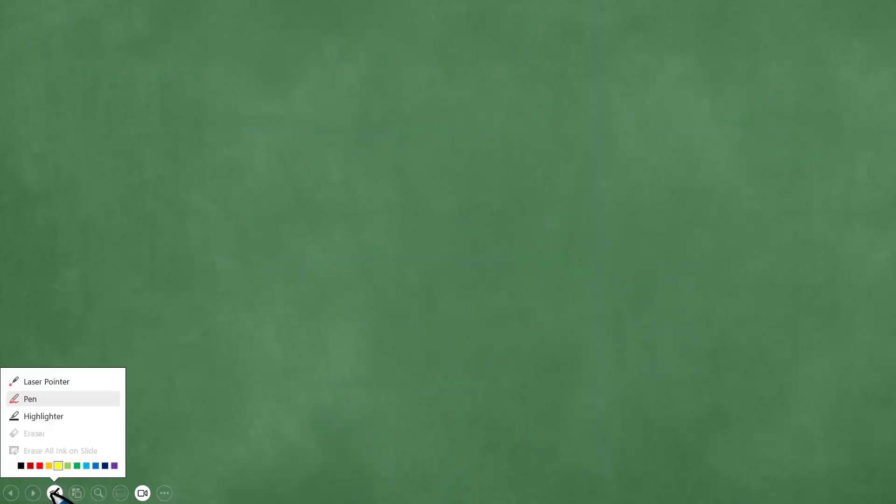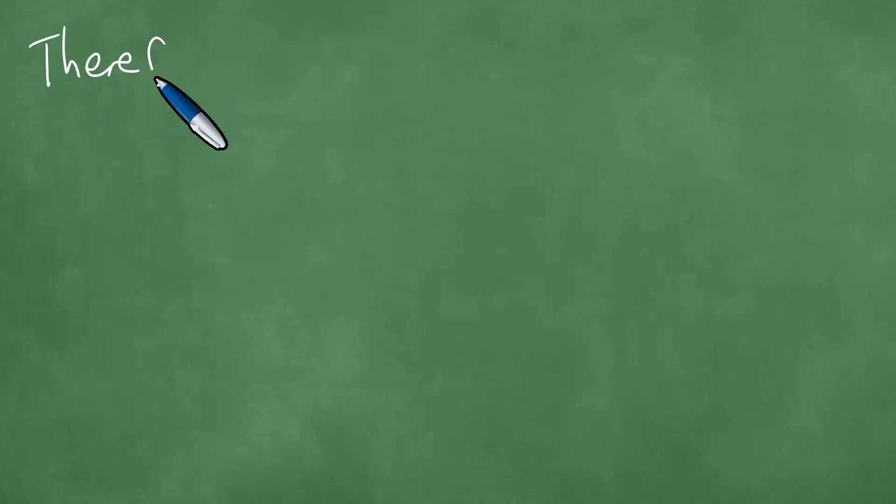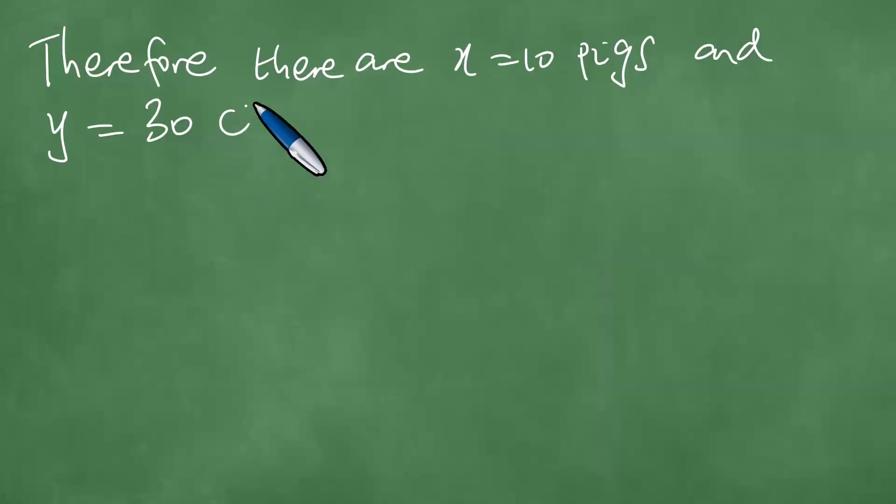And we're able to make the following inference. Therefore, there are X equals 10 pigs and Y equals 30 chickens.